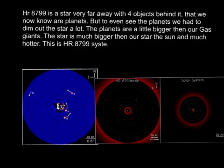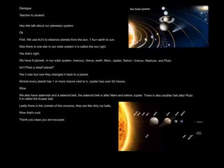Here's a dialogue explaining our solar system from a teacher to the students. Hey, let's talk about our planetary system. The students say, okay. First, we will use AUs to distance planets from the sun. Earth's AU is 1,